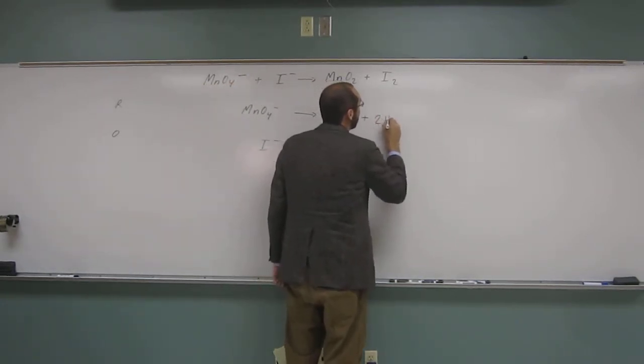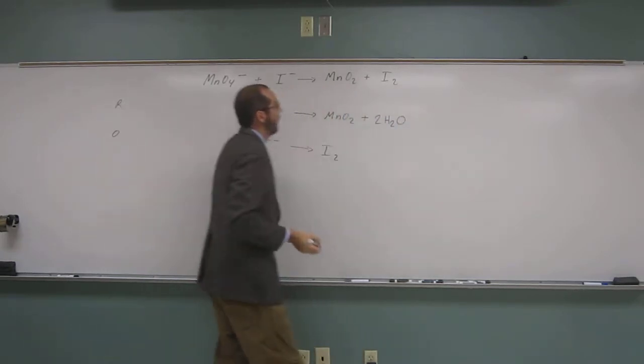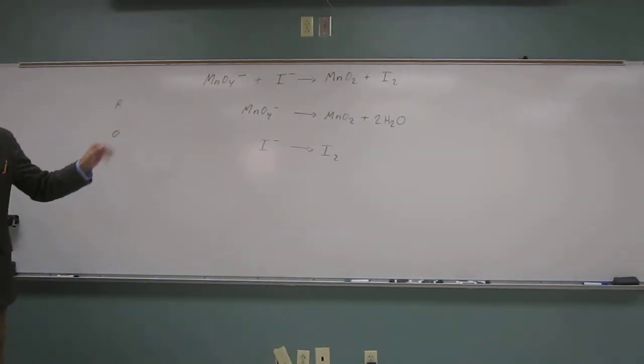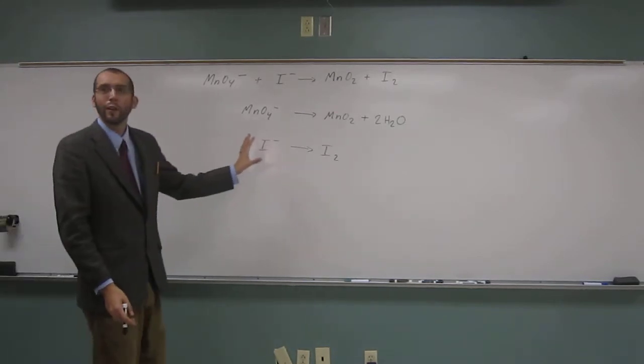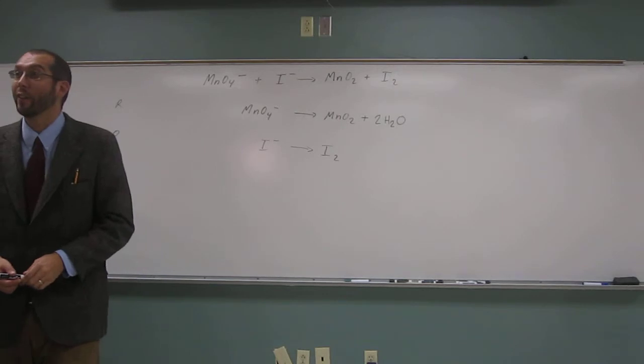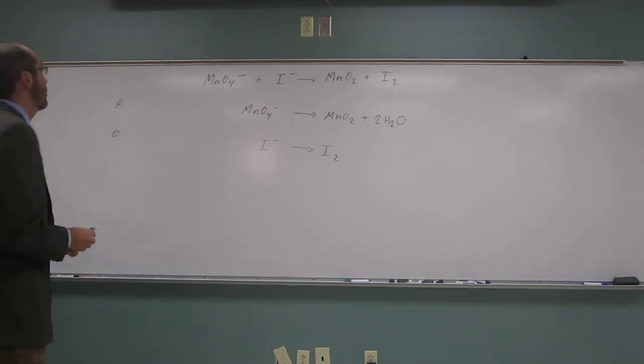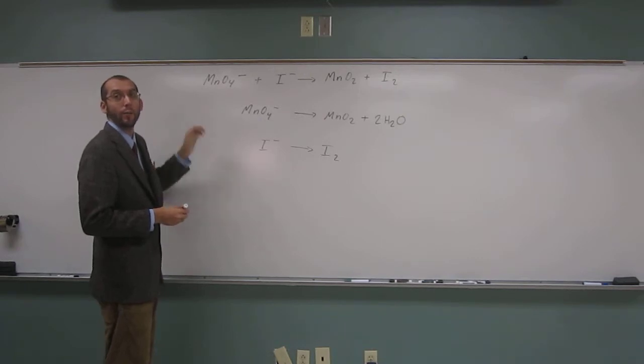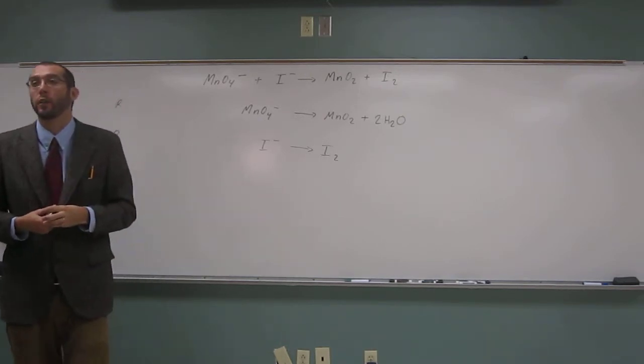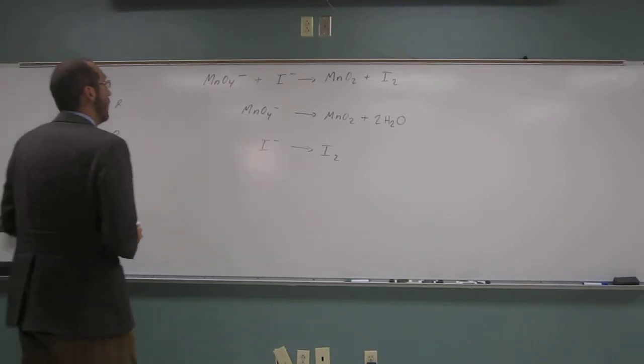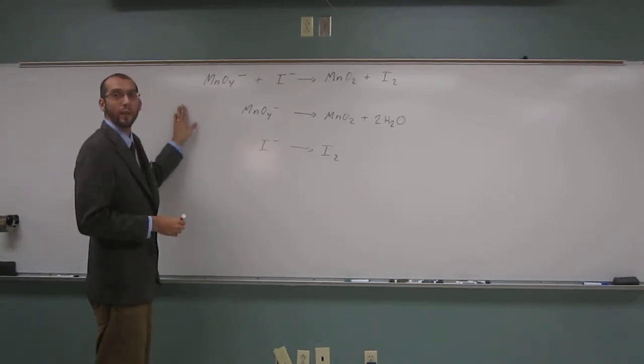So 2H2O. Now our oxygens are balanced. Do you guys see that? But what do you notice? The H's aren't balanced now. So how do we balance our H's? We're going to have to add H's over on this side, but remember we add them as protons, or H+ ions. So how many of those H+ ions are we going to need? Four, exactly.